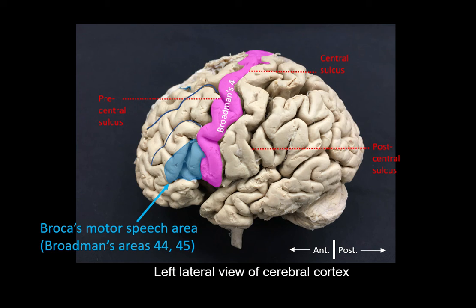Any destructive lesion in the inferior frontal gyrus where the Broca's motor speech area is situated would result in a loss of ability to produce speech — in other words, expressive aphasia. Aphasia means there is loss or impairment of speech, but only the motor component will be affected. The patients will retain the ability to think about words and know what they wish to say. They can write words and understand their meaning when they see or hear them; it's just that they cannot express the words out of their mouth.